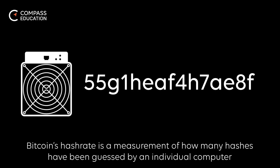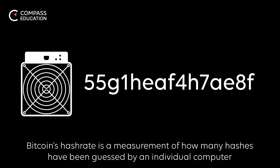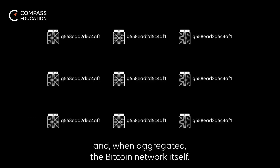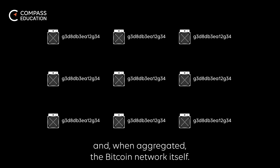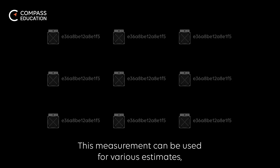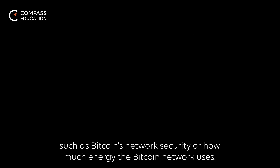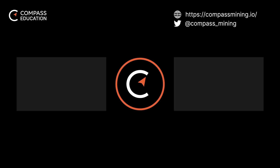Bitcoin's hash rate is a measurement of how many hashes have been guessed by an individual computer and, when aggregated, the Bitcoin network itself. This measurement can be used for various estimates, such as Bitcoin's network security or how much energy the Bitcoin network uses.